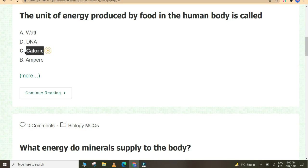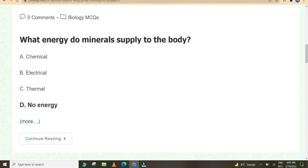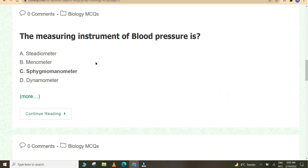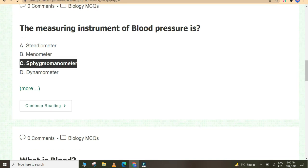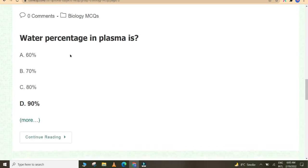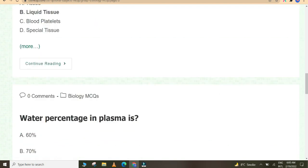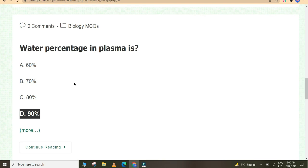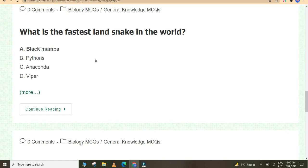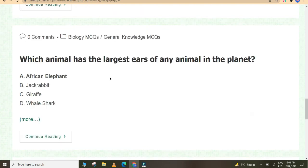Amount of water in mammalian blood is 90%. Proteins are made of amino acids. The unit of energy produced by food in the human body is called calorie. What energy do minerals supply to the body? No energy. The measuring instrument of blood pressure is sphygmomanometer. What is blood? Liquid tissue. Water percentage in plasma is 90%.